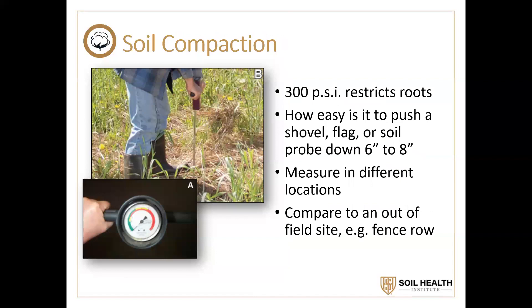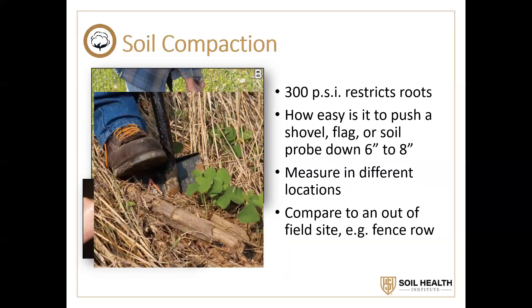Now let's talk about compaction, which takes place in a lot of conditions. Modern agriculture is notorious for creating compacting layers. How do you evaluate that? One thing you can do is use a penetrometer — it measures the resistance of the probe as it goes down through the soil profile. When you hit 300 pounds per square inch of pressure resistance, roots can't penetrate that. Not all of us have a penetrometer, so you can use a shovel, a spade, a survey flag, or a soil probe and try to push it down through the soil profile.